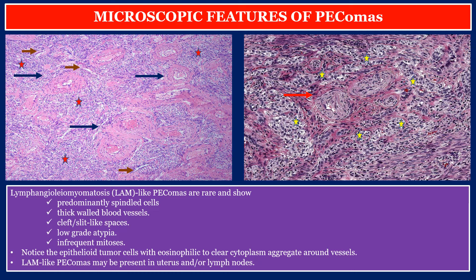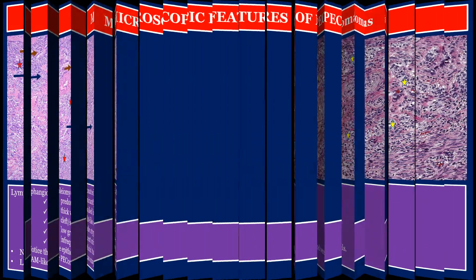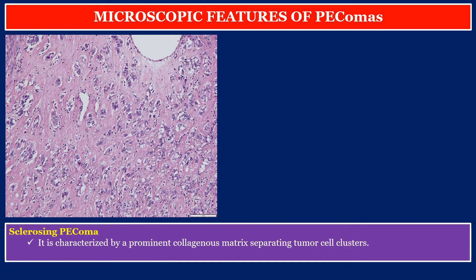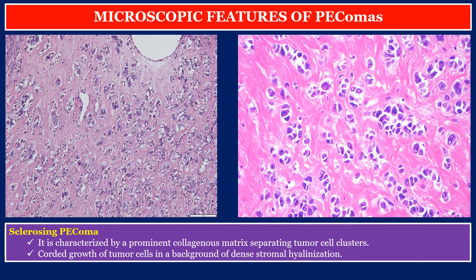LAM-like PEComas may be present in the uterus and/or lymph nodes. Sclerosing PEComa is characterized by a prominent collagenous matrix separating tumor cell clusters. This photo shows corded growth of tumor cells in a background of dense stromal hyalinization.